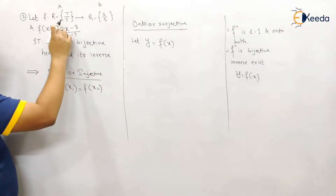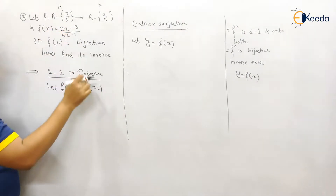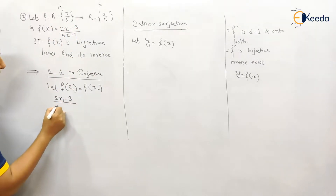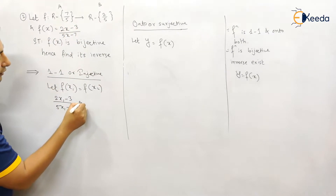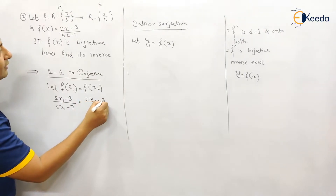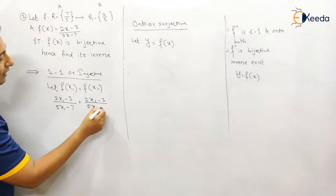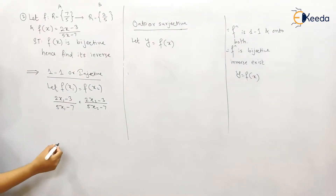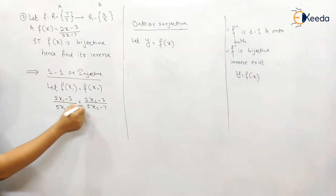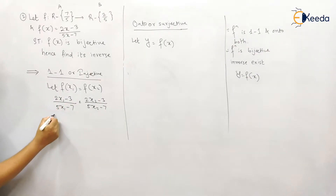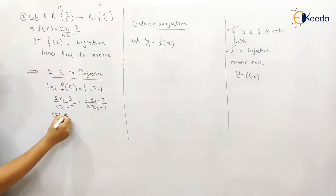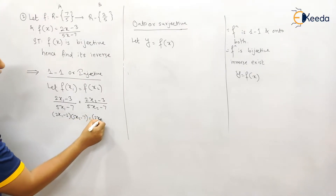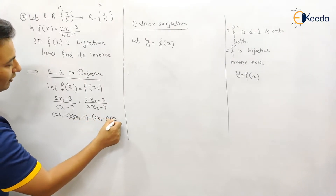We write f(x1) = f(x2): once I put x1 and then replace it with x2. So this becomes (2x1 minus 3) / (5x1 minus 7) = (2x2 minus 3) / (5x2 minus 7). Let us simplify — our aim is to prove x1 = x2.